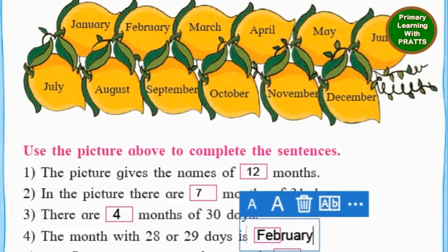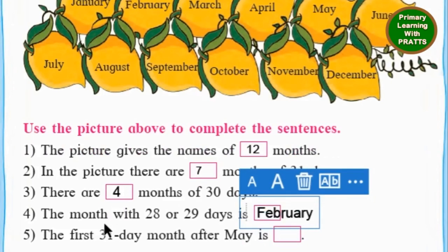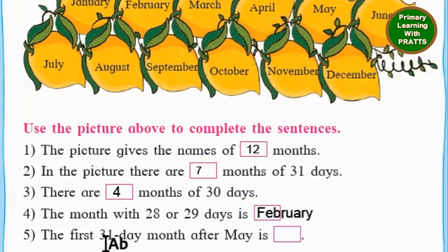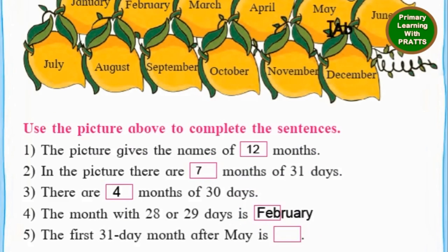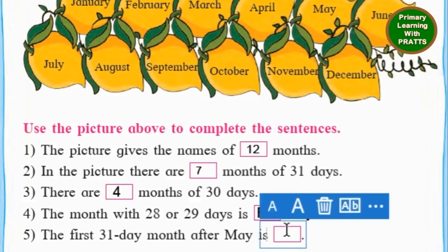Next one: the first 31-day month after May is... May is followed by June which has 30 days, and then we have July. So we will write the answer as July. J-U-L-Y. July.